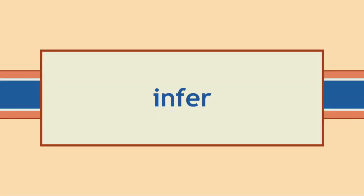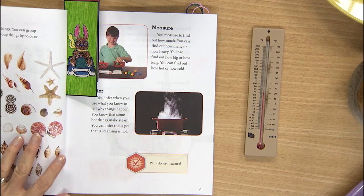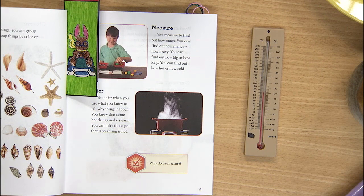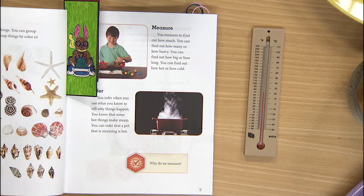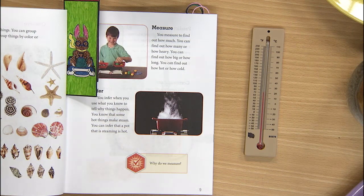Besides classify and measure, you also read the word infer. And we've already talked about that, haven't we? We inferred that the kettle was hot. So what does it mean to infer? Well, you infer when you use what you know to tell why things happen. Look at page 9, and you see the pot here. What color is the pot? It's red. And what is coming from the top of the pot? Steam. So the color of the pot and that it has steam are things that we know from looking at the picture. What can you tell about the pot that is not pictured? Well, if this pot has steam coming from it, it is hot. What makes us think that it's hot? It has steam. So knowing that the pot is hot because it is steaming is inferring. Remember: when you use what you know to tell why things happen.